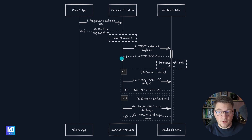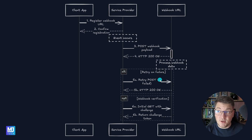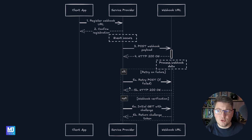There are also some alternative scenarios to explore. The first is what happens if the initial request sending the webhook payload fails. In that case, we need to implement a retry mechanism so we can try a couple more times, sending the request to the webhook URL hoping it will succeed and we'll get back a 200 OK response. But there's also a situation where the webhook fails even after retries, and then we have to implement some sort of compensation mechanism — we're going to discuss this in a future video.